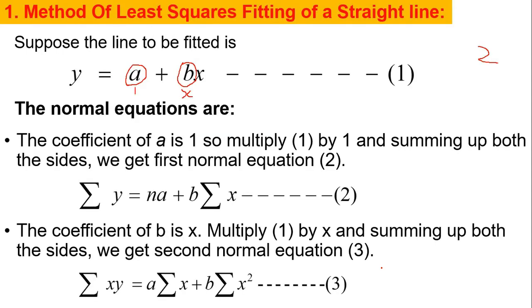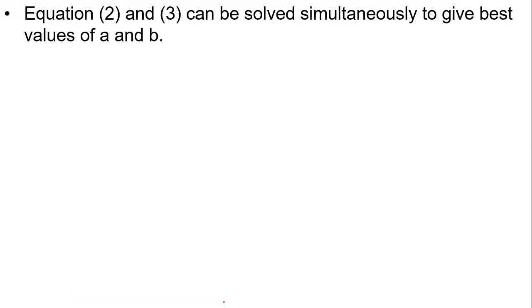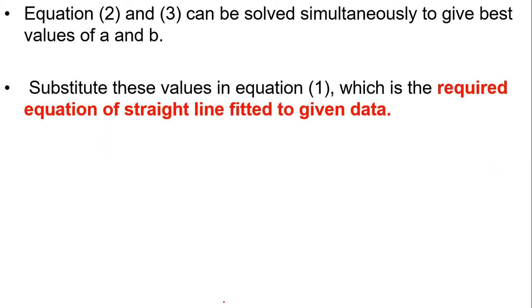Solving equations 2 and 3: the value of summation y can be determined from the given values of y, summation x from the given values of x, and summation xy and summation x² from a calculation table. Substituting these values and solving equations 2 and 3, we get the values of a and b. After substituting these two values in equation 1, we get the best-fit straight line to the given data.